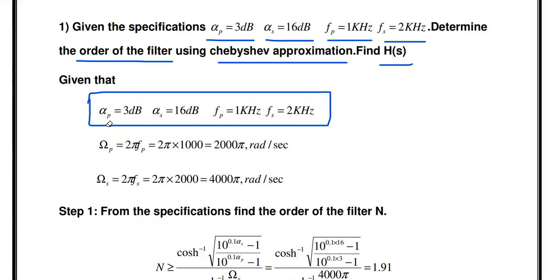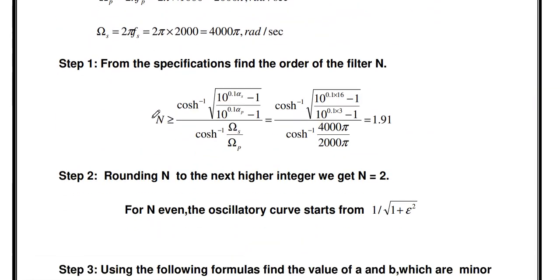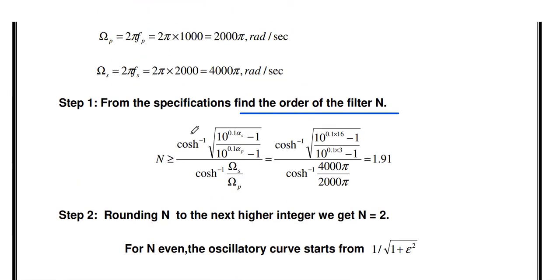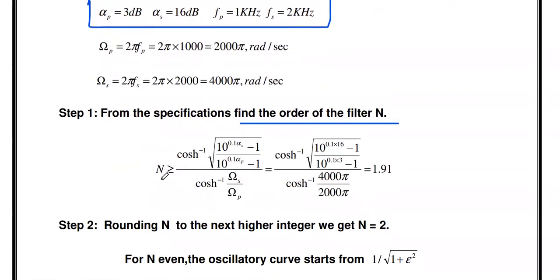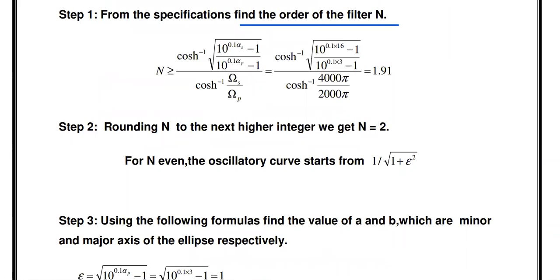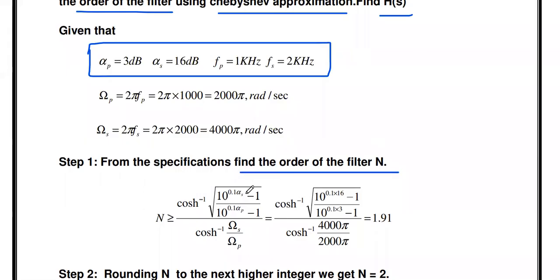Now we have all four values: alpha_p, alpha_s, omega_p, and omega_s. Proceeding with the design, the first step is to find the order of the filter. Since alpha_p and alpha_s are given in dB, we use the formula: n ≥ cosh⁻¹(√((10^(0.1·α_s) − 1) / (10^(0.1·α_p) − 1))) / cosh⁻¹(ω_s / ω_p).